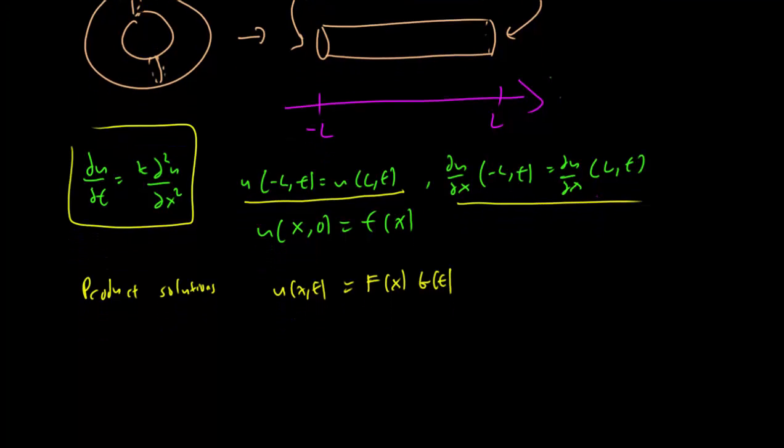Once again, plugging it in, we find the equation for g exactly the same. We have 1 over kg(t) partial g(t) partial t equals minus lambda over k here.